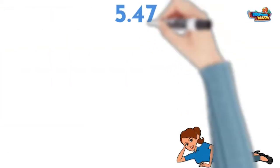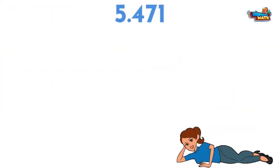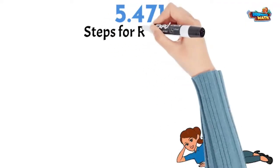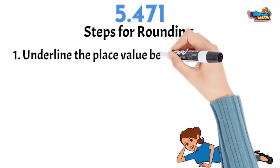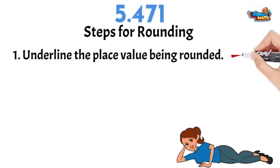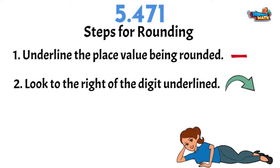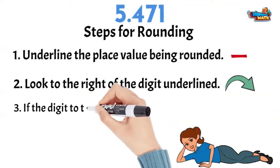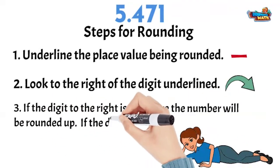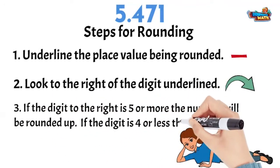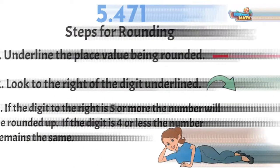Let's try rounding the number five and four hundred seventy-one thousandths to the nearest tenths place. Here are some steps to follow when rounding. First, underline the place value you would like to round. Look to the right of the digit being rounded. If the number is five or more, the digit will be rounded up. If the digit to the right is four or less, the underlined value will stay the same.